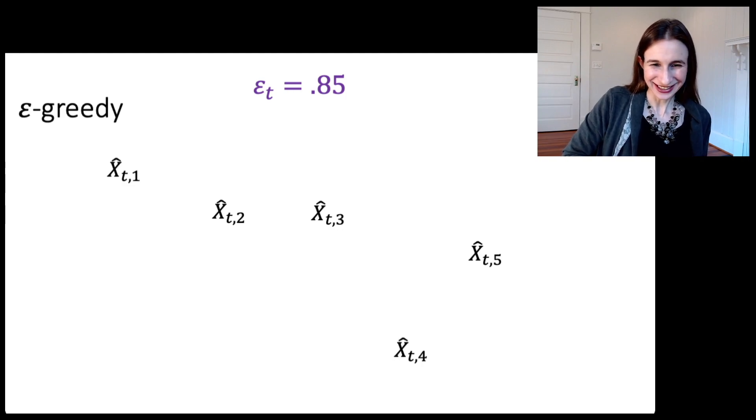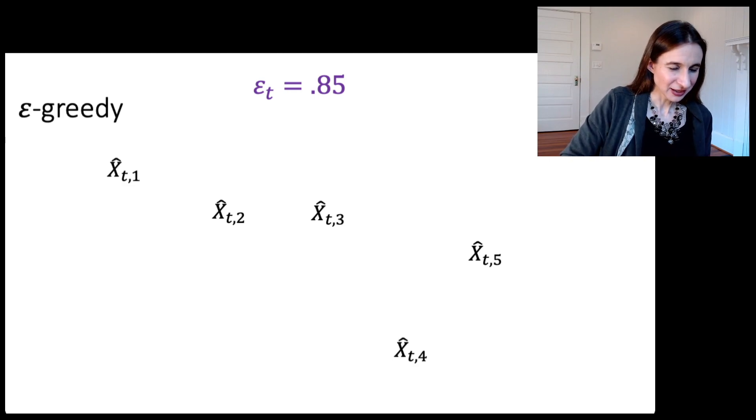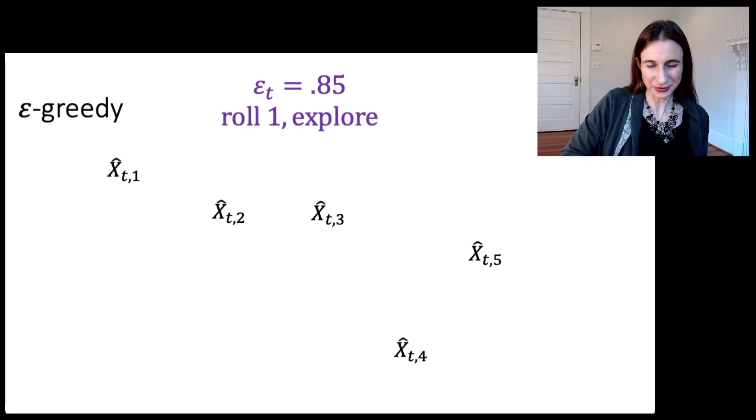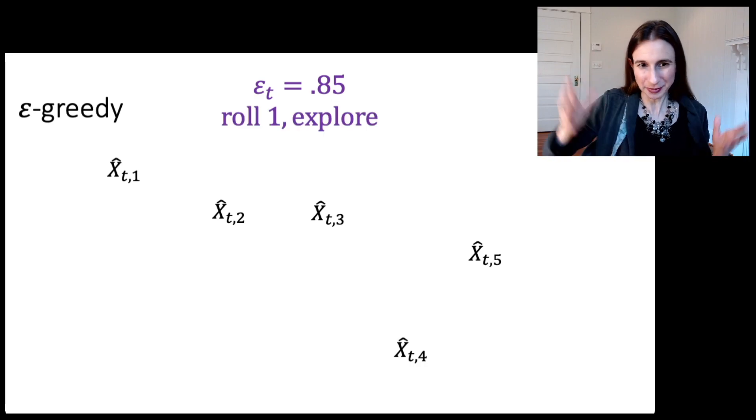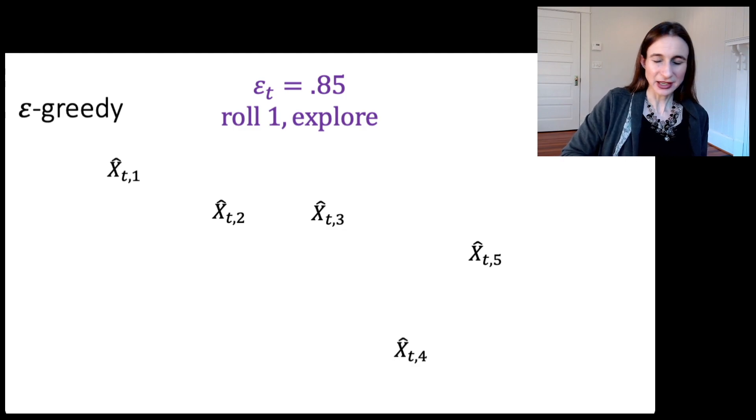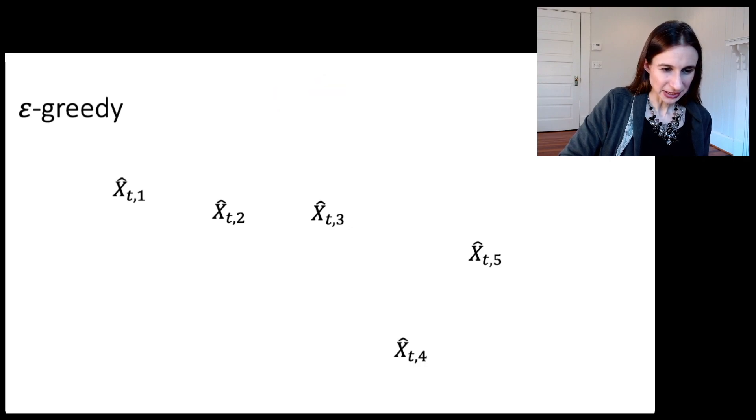I'm going to flip a coin. And the probability of the coin landing on heads is 0.85. And so in that case, I happen to roll a one, and I explore. Because again, if I roll a one, I explore. If I roll a zero, I'm going to exploit. So I explore. So let's explore arm one. That'll bring its mean down a little bit. Now epsilon is 0.8 with probability 0.8. I explore. Otherwise I exploit. I rolled a one. So I explore.